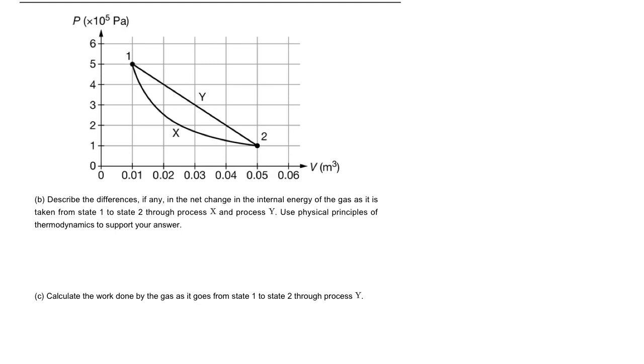The last question is asking you to actually calculate the work for just process Y here. Recall you could use work equals negative pressure times the change in volume. Now in this case the pressure is actually changing, so you could do approximately equal to the average pressure. Actually in this case it's going to be exactly equal to it because it's a nice line.